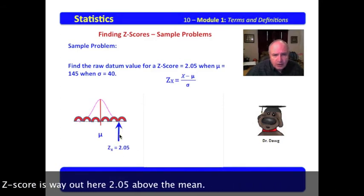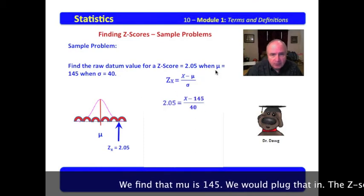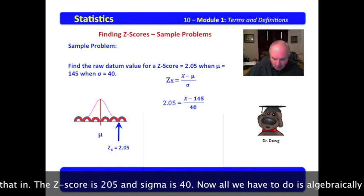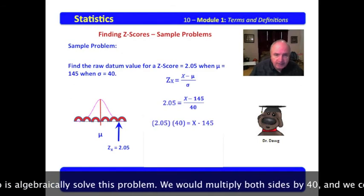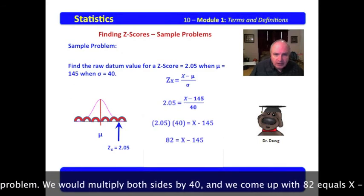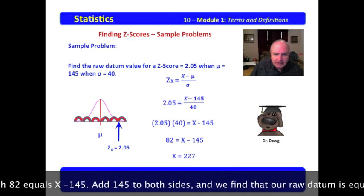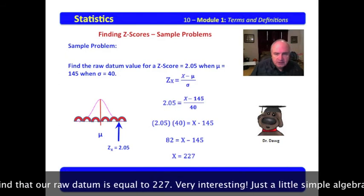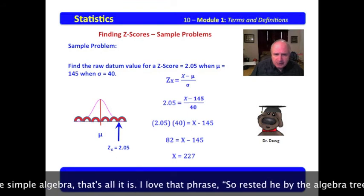Now, we know that our z-score is way out here, 2.05 above the mean. We find that μ is 145. We would plug that in. The z-score is 2.05 and σ is 40. Now, all we have to do is algebraically solve this problem. We would multiply both sides by 40, and we come up with 82 equals x minus 145. Add 145 to both sides, and we find that our raw datum is equal to 227. Very interesting. Just a little simple algebra. That's all it is.